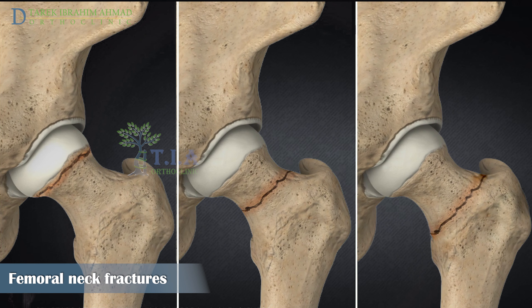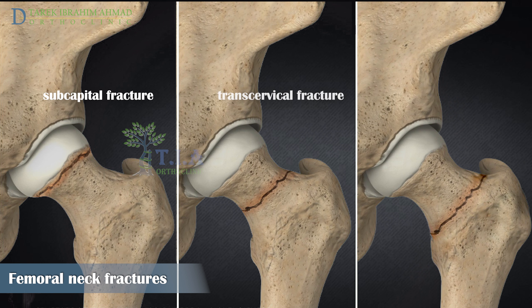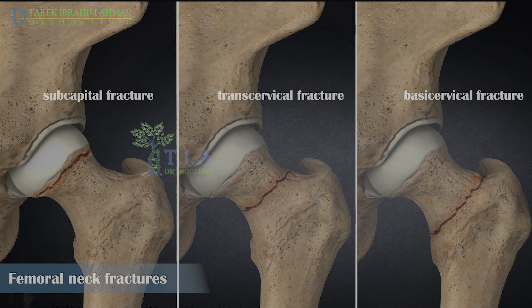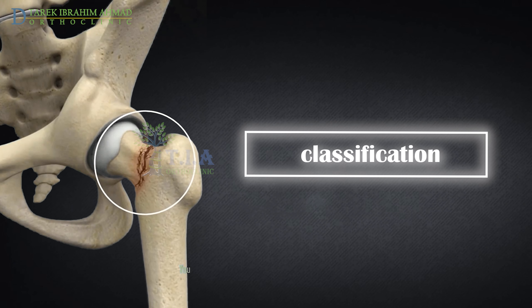The femoral neck can break in different areas: directly below the femoral head (subcapital), in the middle (transcervical), or toward the side (basicervical). In general, the more proximal the fracture line, the higher the risk for avascular necrosis.